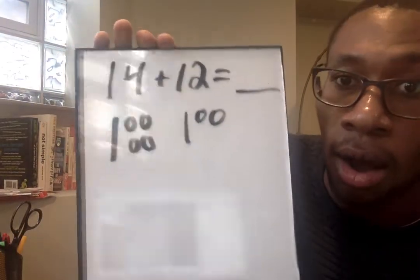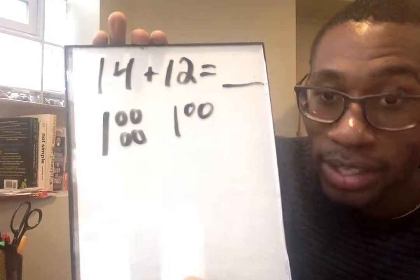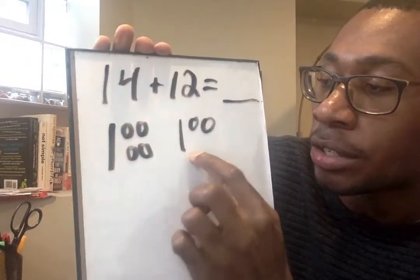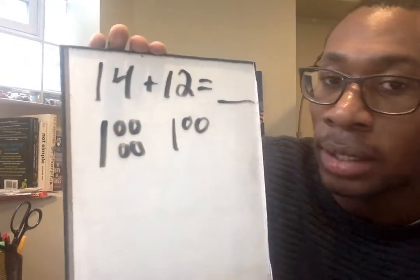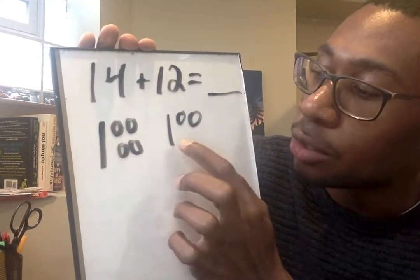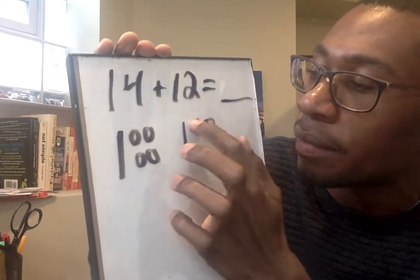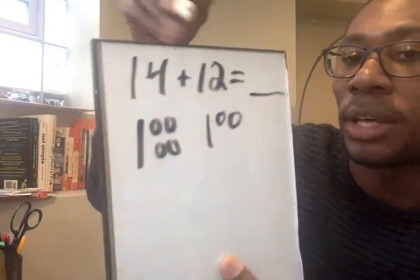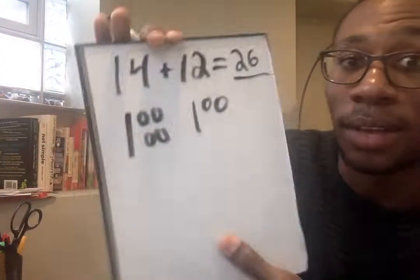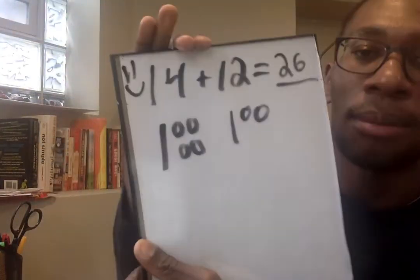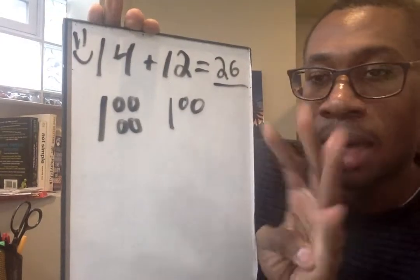Now I'm going to add it all up. Make sure we don't get tricked this time. We're going to count our tens as our tens and count the ones as our ones. Get ready. 10, 20, 21, 22, 23, 24, 25, 26. So I know that 14 plus 12 equals 26. If you got that right, you can put a nice smiley face by that problem. Let's see if you can get all four smiley faces.